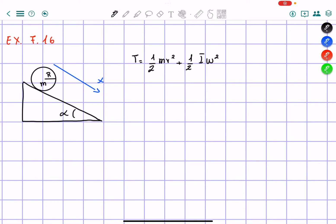In problem 7.16, you're given a cylinder rolling down an inclined plane with angle alpha, and this cylinder doesn't slip.